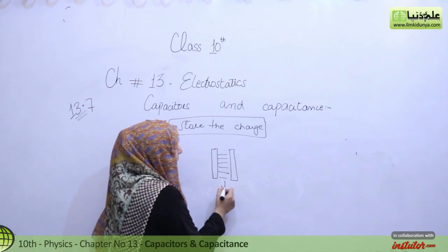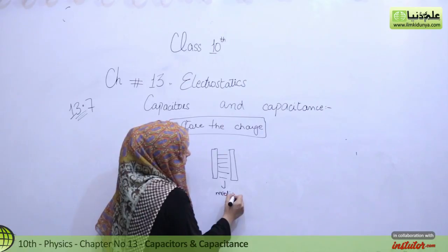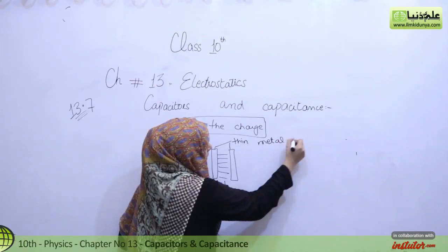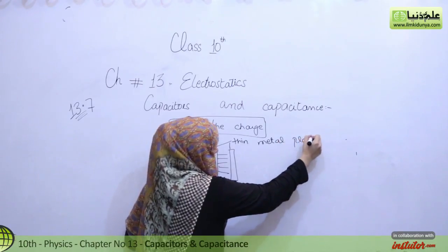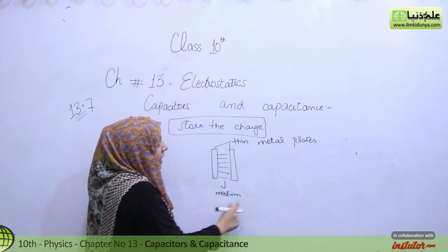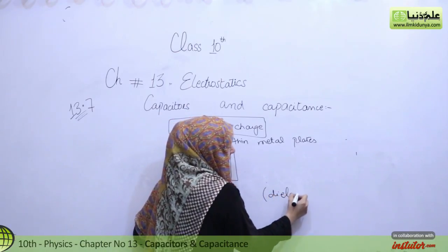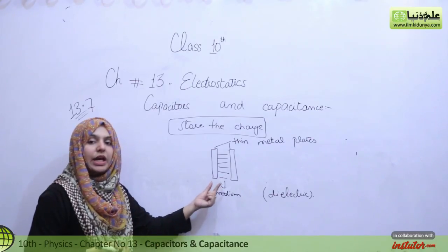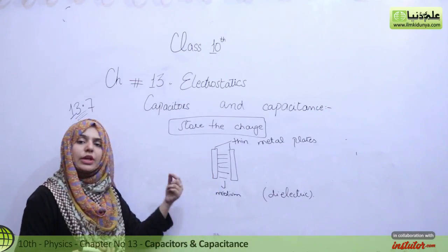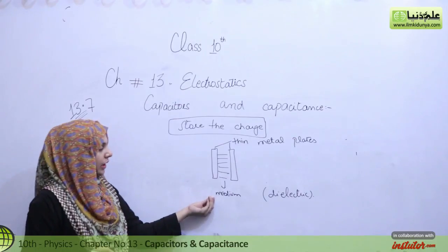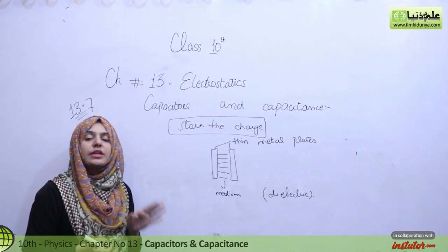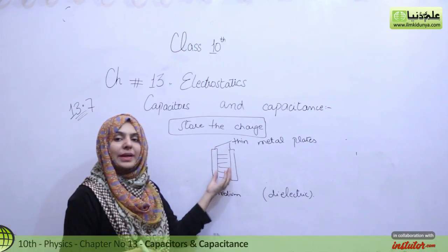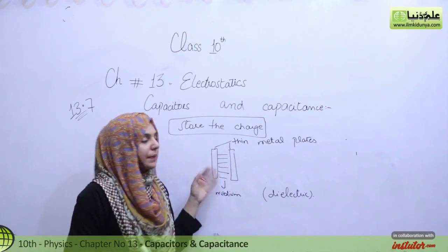Here we have a medium. This medium is also called a dielectric. Either air can be used here, or a thin sheet film can also be used — anything can be used. Mostly we take air. So there are two plates, two parallel plates, with a medium present between them.